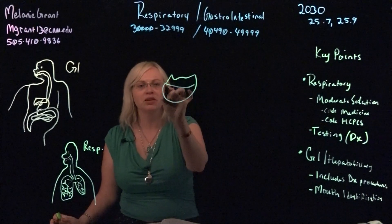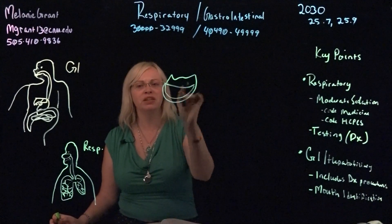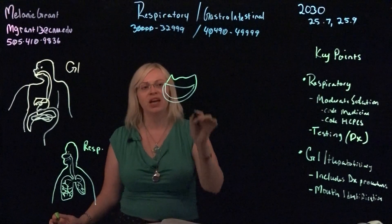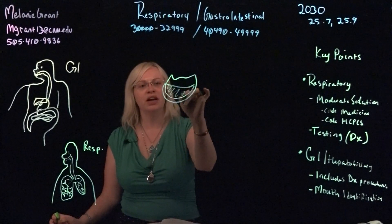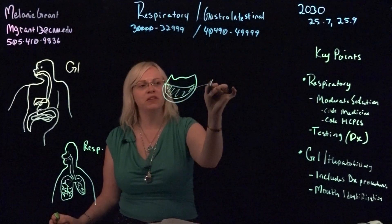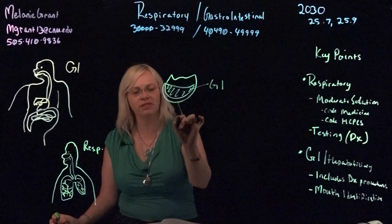On the lips, approximately two-thirds of the lip is going to be considered the vermilion border. And this is your darker area of the lips itself and part of the GI system.